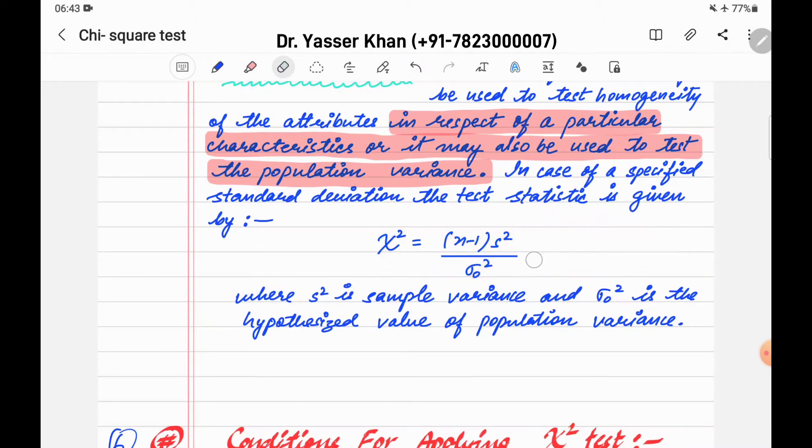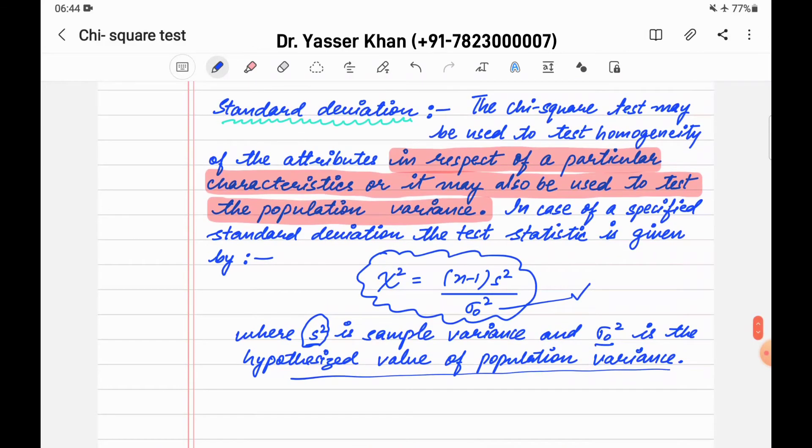In case of a specified standard deviation, the test statistic is given by this formula. I will highlight it. The formula is: chi-square is equal to (n-1)s² divided by σ², where σ² is the population variance. If there is a direct question in the paper, you can write it in this way.